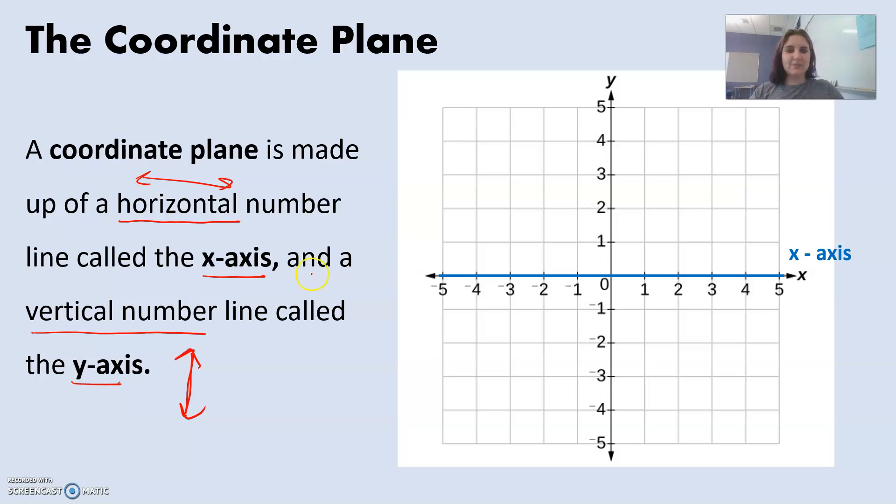So there's the x-axis in blue, goes side to side. It looks like a normal number line. And then the y-axis goes up and down, and it's like a number line that's going up and down, rather than left to right.